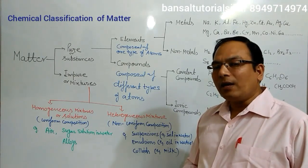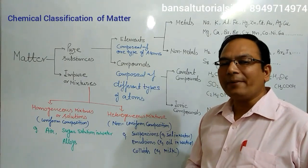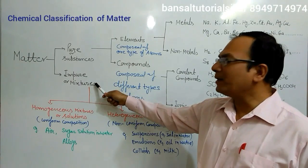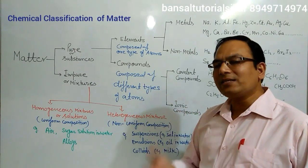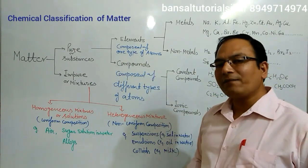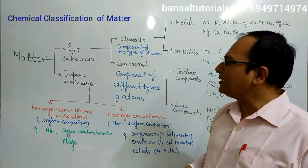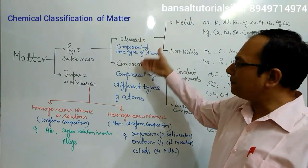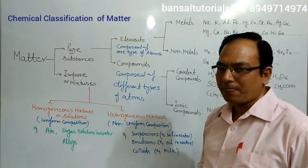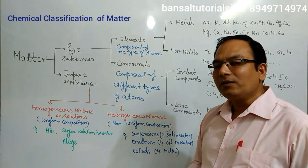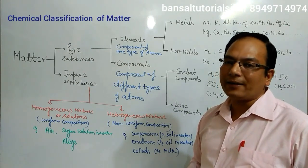So students, in this lecture we have understood that matter around us exists in three chemical forms: elements, compounds, and mixtures. Elements are the simplest form of the material — the basic building blocks, the alphabets of the language of chemistry. Elements combine to form compounds. Different elements or different compounds, when physically mixed together, form mixtures. In the next lecture we will discuss how we can write chemical formulas and their chemical names.